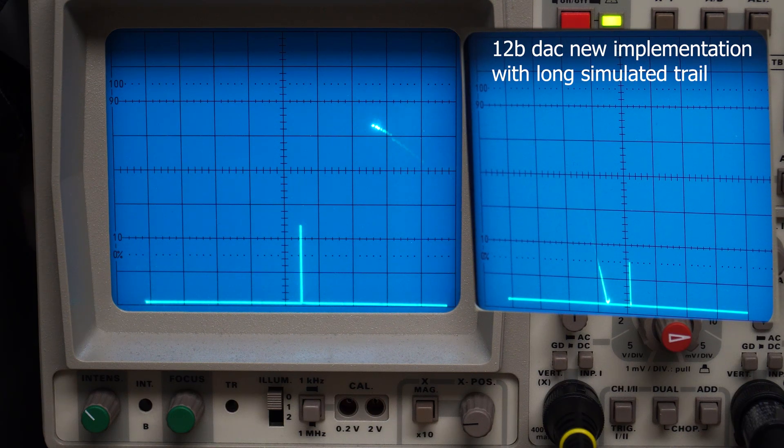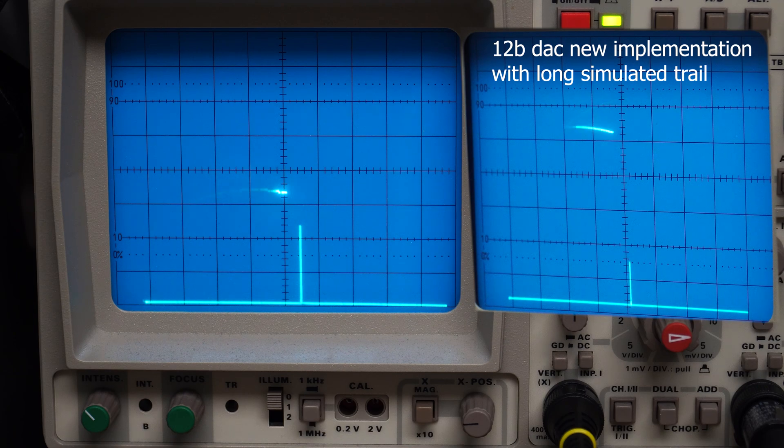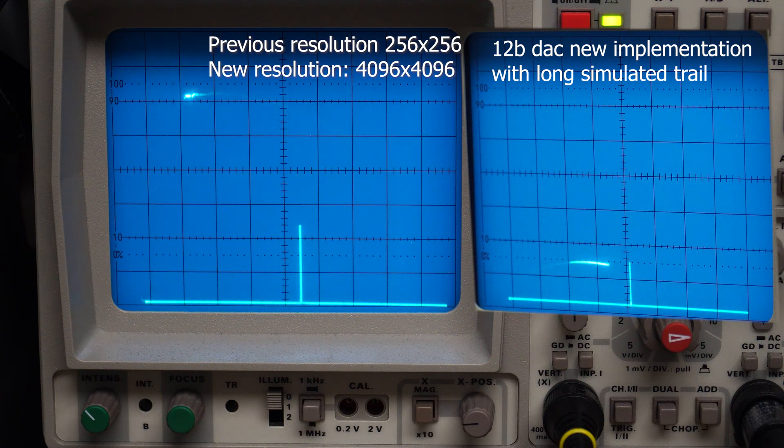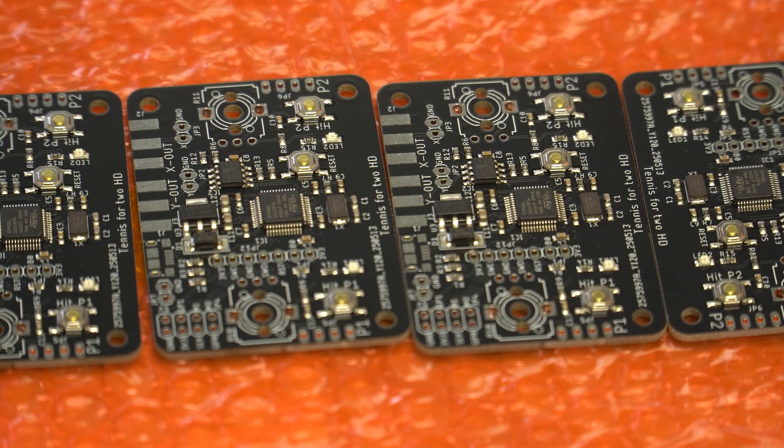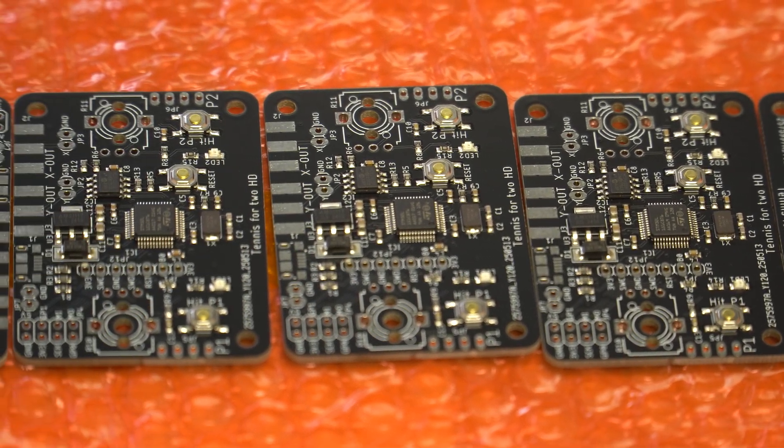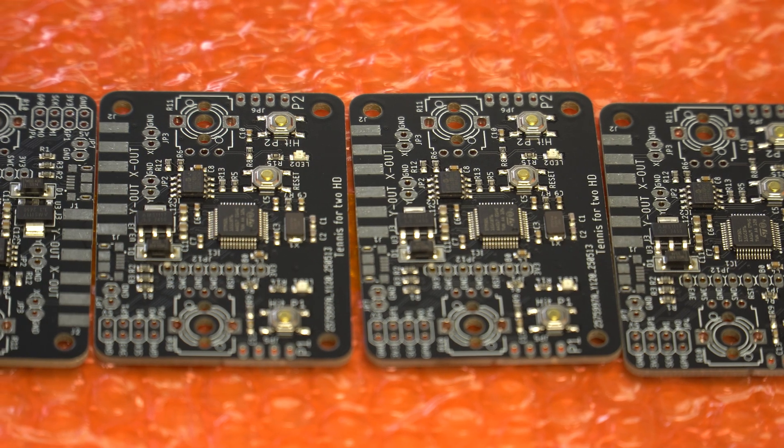The resolution issue can be improved by using a faster 32-bit processor and a higher resolution DAC. A 12-bit DAC, for example, allows for 4096 steps for a truly modern 4K experience at a high frame rate of possibly 100Hz or more, exceeding even the original analog frame rate of supposedly 36Hz.